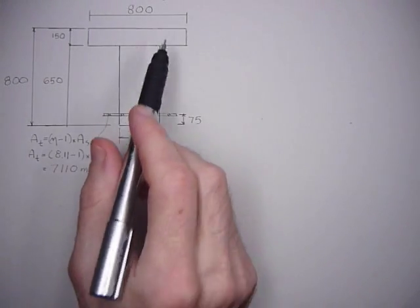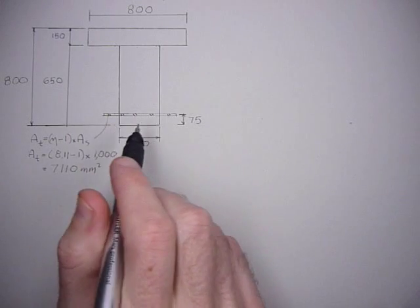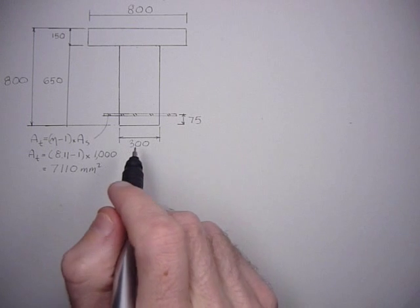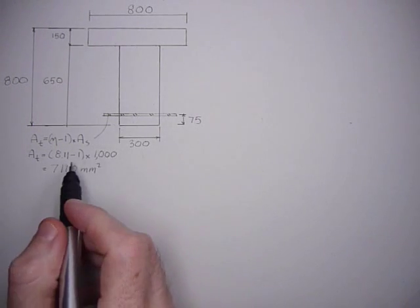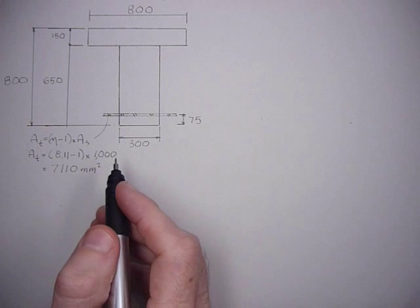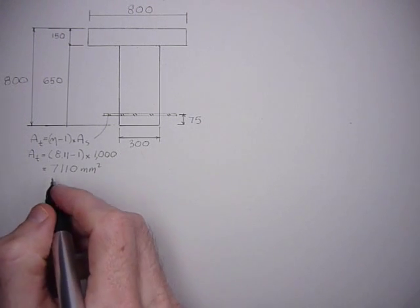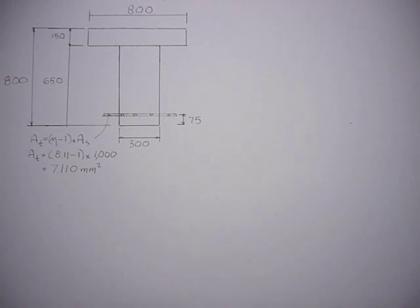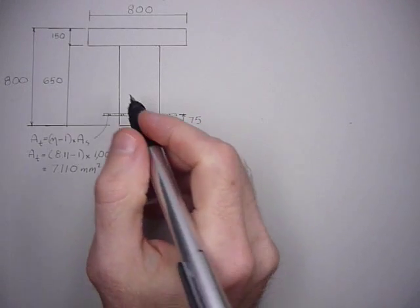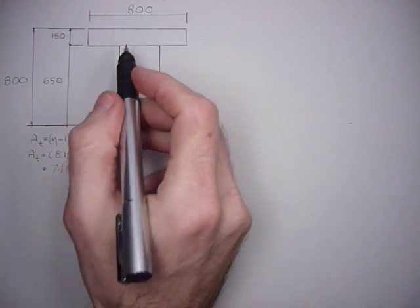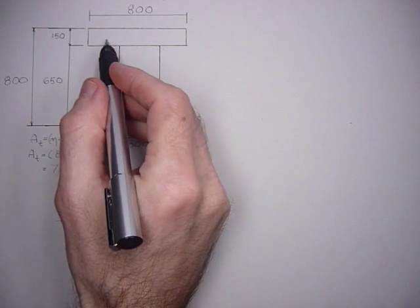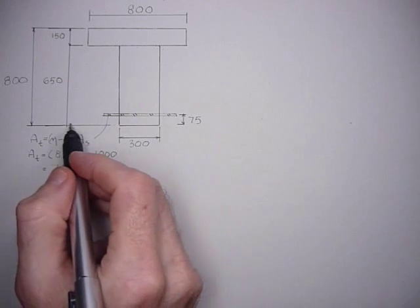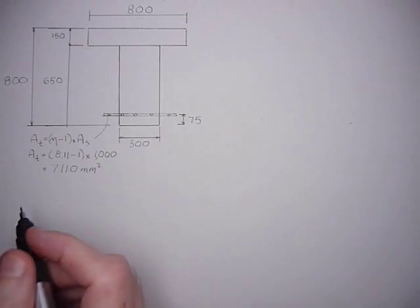We have a T section today and we're going to solve for the gross moment of inertia for the uncracked section, assuming the area of steel is 1000 millimeters squared. The first step is to calculate the neutral axis location by taking areas of the three rectangular segments about the base to calculate the Y bar.